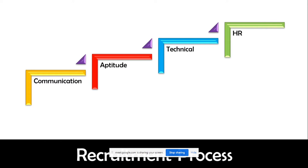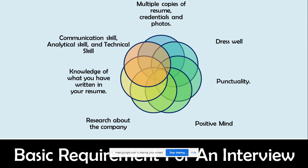As the common interview recruitment process is concerned, you'll first have a communication round — they'll test your communication. If it's an MNC company, definitely you have to speak. That communication may be of different genres: one-to-one communication, voice audio round, or group discussion. Then you'll have aptitude — logical reasoning, verbal reasoning, and quantitative aptitude. Then you might have a technical round depending on what company you're going to. And finally, the HR round, which is the most important round that will fetch you the job.